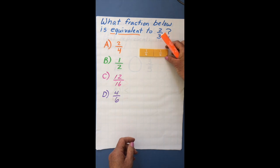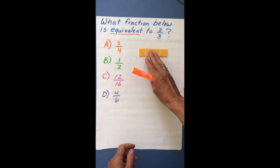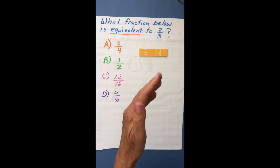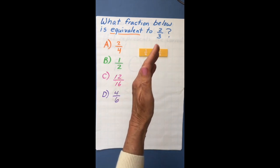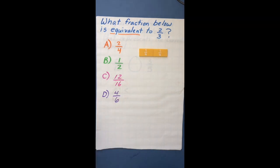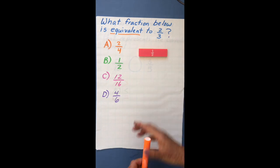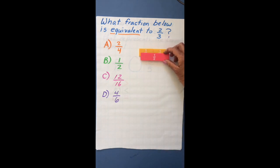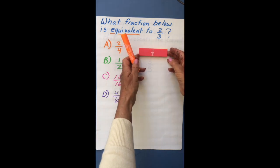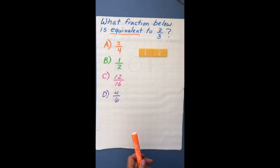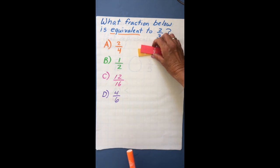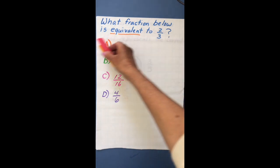For example, using fraction tiles, I have 2 fourths. To find the fraction equivalent to 2 fourths, I find the same amount cut into fewer pieces. 2 fourths is the same as one half — we can see this with our fraction sandwich. We've sandwiched two together and they're the exact same amount; one has just been cut into more pieces. That's the theory behind equivalent fractions.